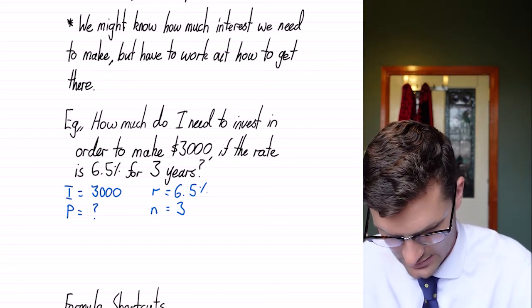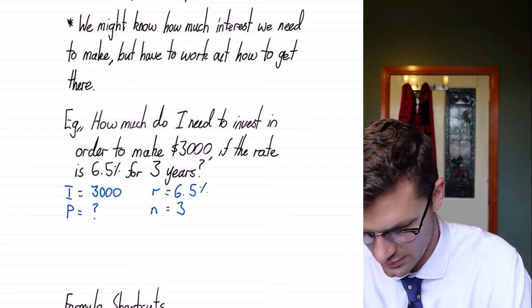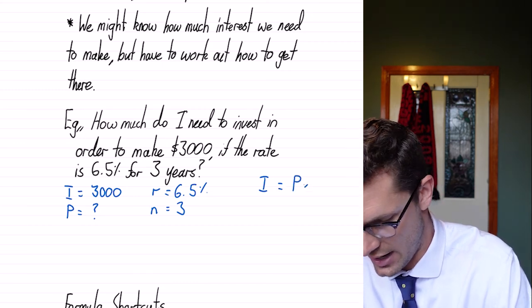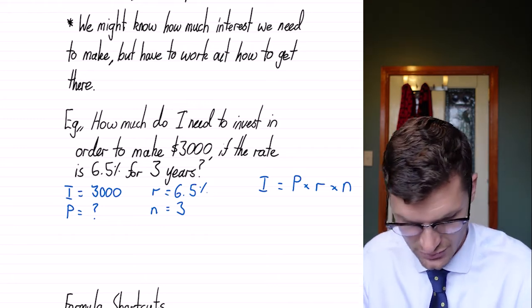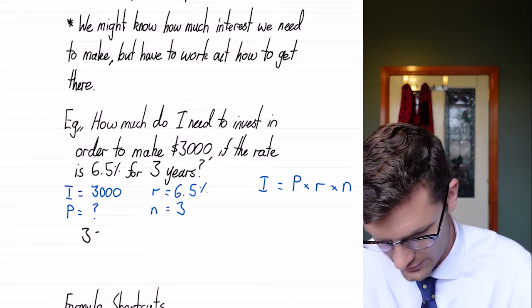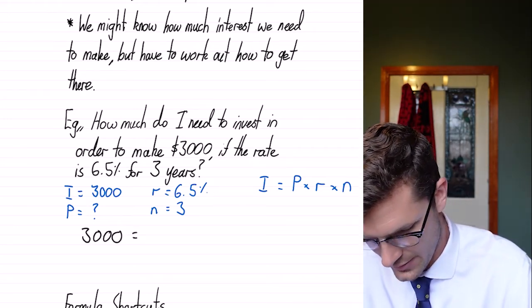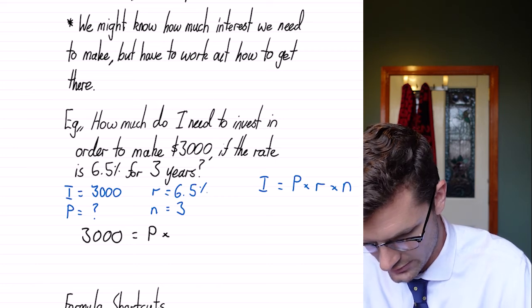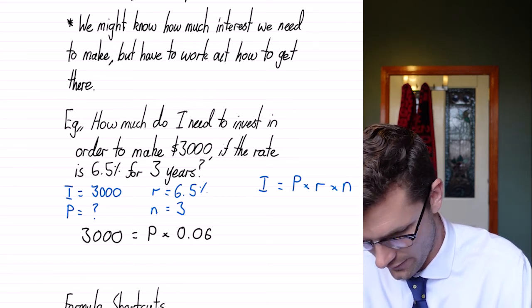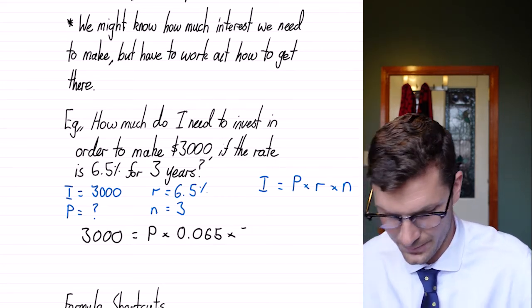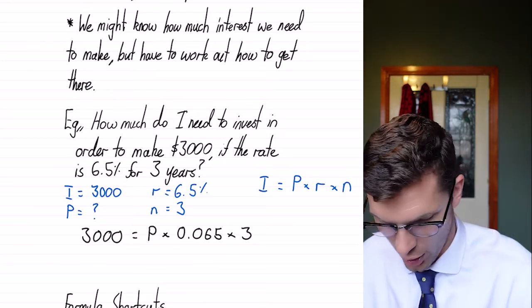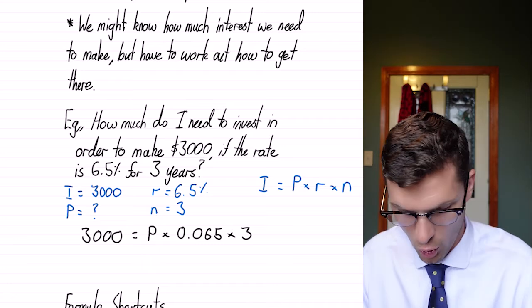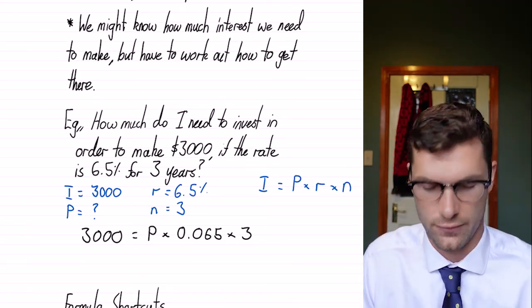So our formula is our interest equals P times R times N. So for this example, just substituting the numbers in, we've got 3,000 equals P multiplied by 0.065 multiplied by 3. So we've gotta get P by itself. And we've got these two times.